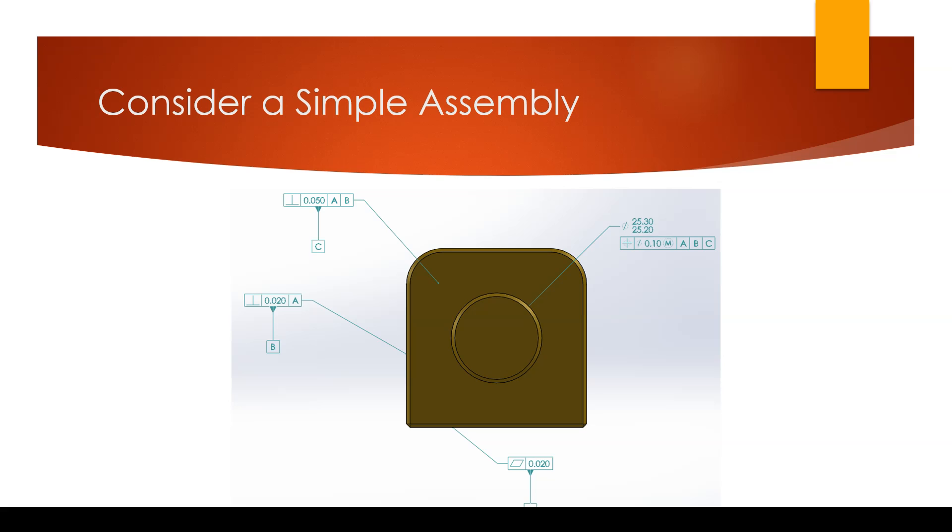We can clearly communicate the hierarchy of importance of the surfaces just described by labeling the bottom surface datum feature A, the left surface datum feature B, and the front surface where the pin is datum feature C. Notice the tolerance scheme using geometric dimensioning and tolerancing. The datums are attached to the surface through leaders along with the geometric tolerances.